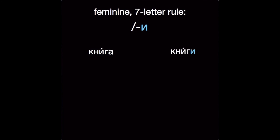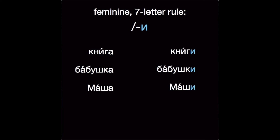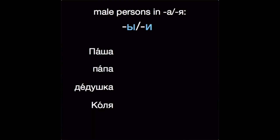Книга → книги. Бабушка → бабушки. Маша → Маши. You've probably seen how a few Russian words referring to men, and often Russian nicknames for men, end in А or Я — like these feminine nouns, they'll take И or И in the genitive. Паша → Паши. Папа → папы. Дедушка → дедушки. Коля → Коли.